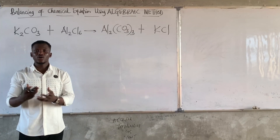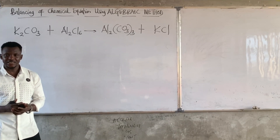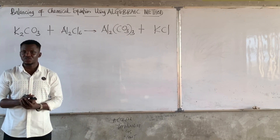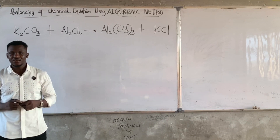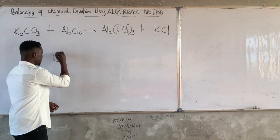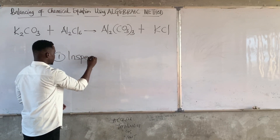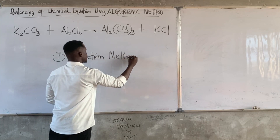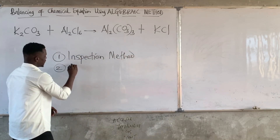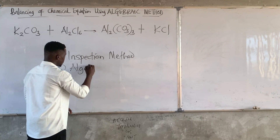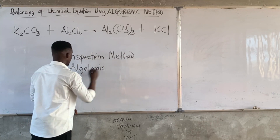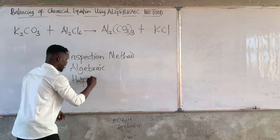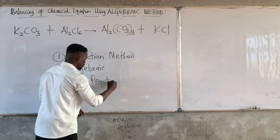Welcome back to our channel. In today's slides I want to focus on how you can balance a chemical equation using the algebraic method. We have several ways of balancing chemical equations. The first one is the inspection method, the second way is the algebraic method, and the third one is the half-reaction method, which is mostly used for redox reactions.